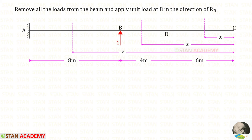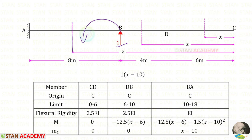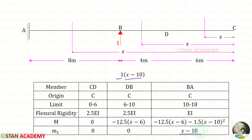Now we are going to find the moment M1. We remove all loads from the beam and apply a unit load in the direction of RB, since it is our first coordinate. For sections CD and DB, there is no load up to those sections, so M1 equals 0. For section BA, only the unit load is present, and it acts in the anti-clockwise direction, so it is positive. The distance is (x − 10), giving M1 = 1 × (x − 10) = (x − 10).